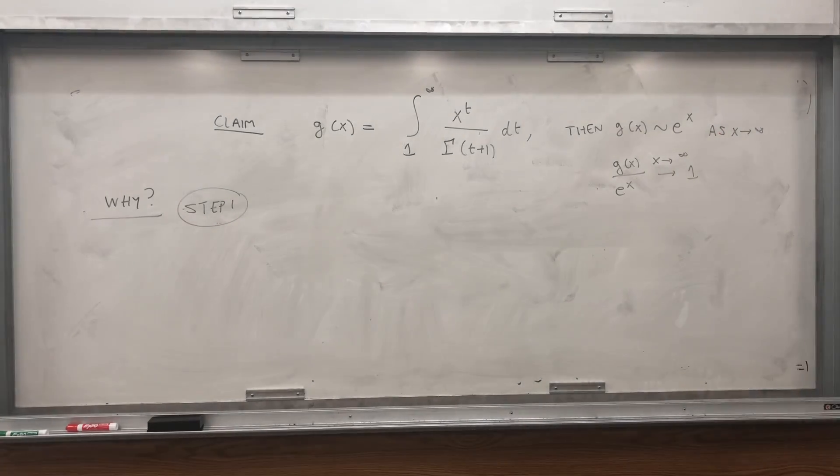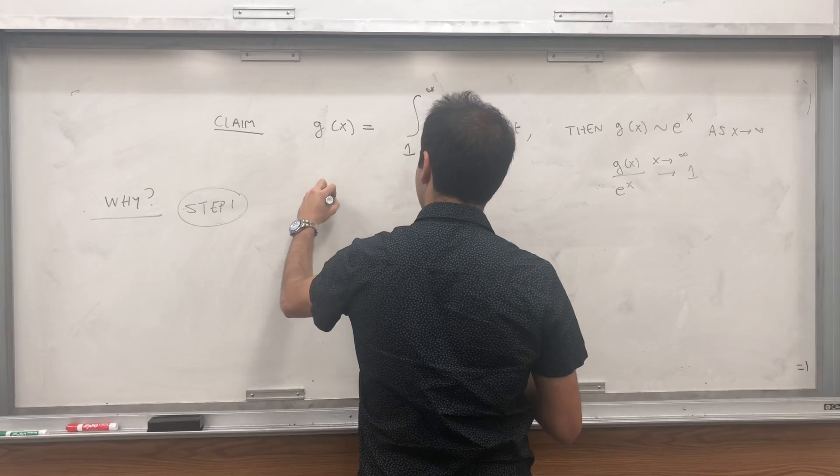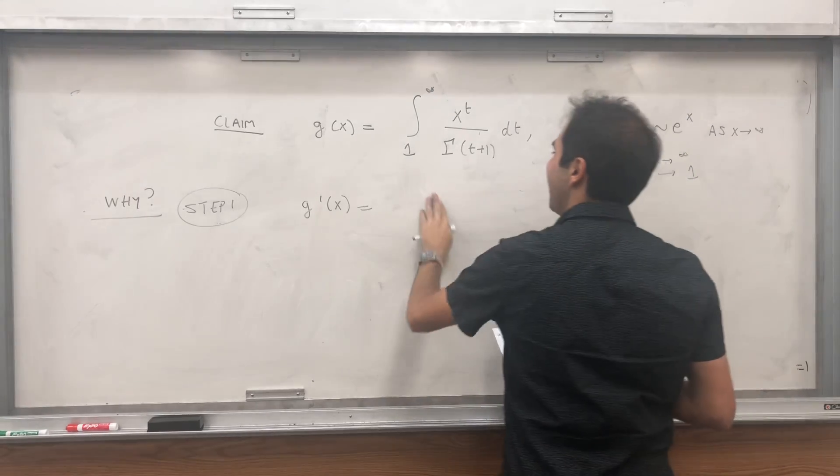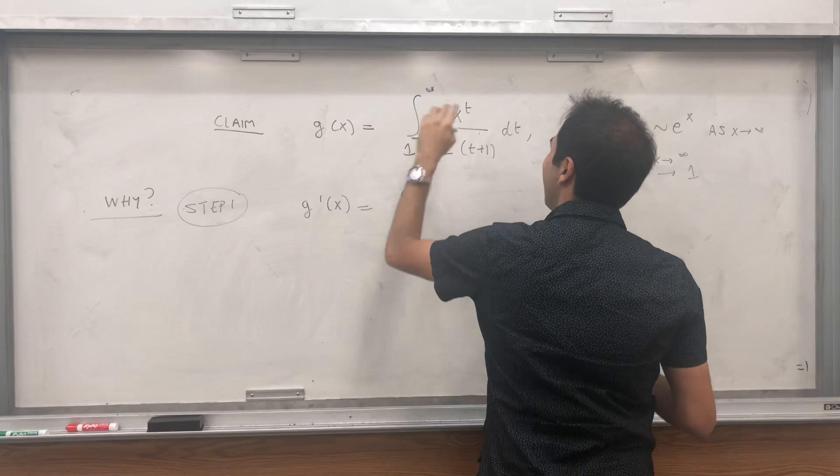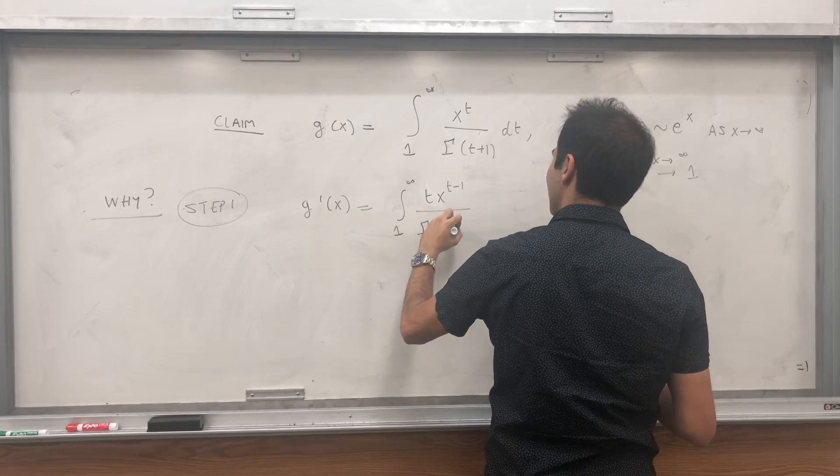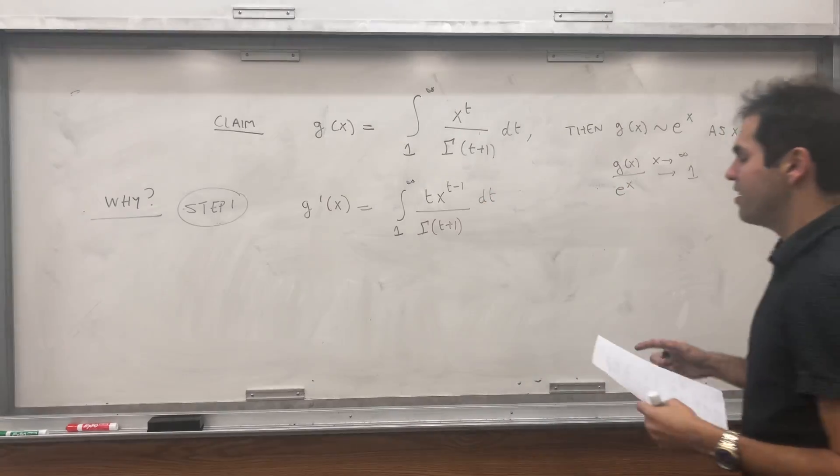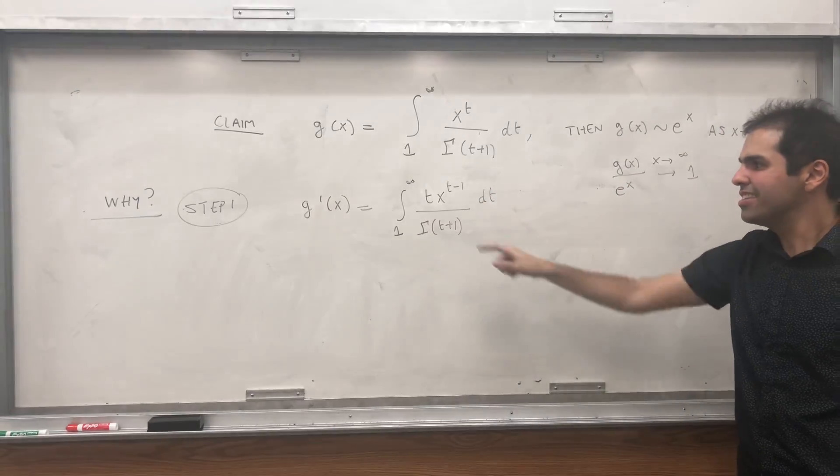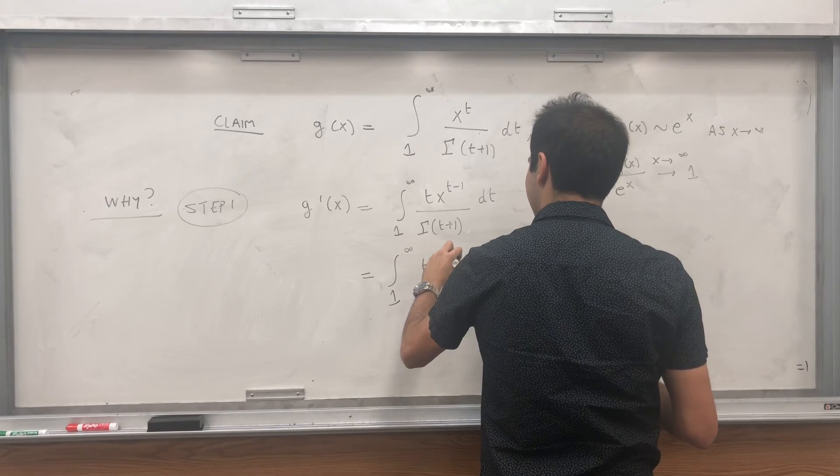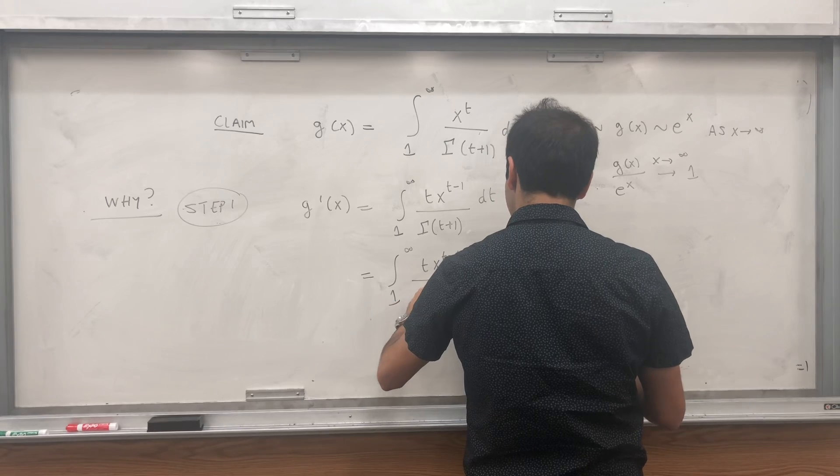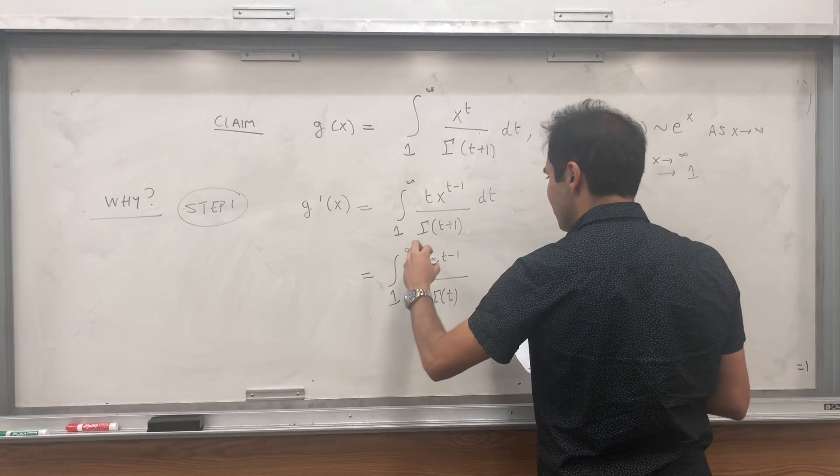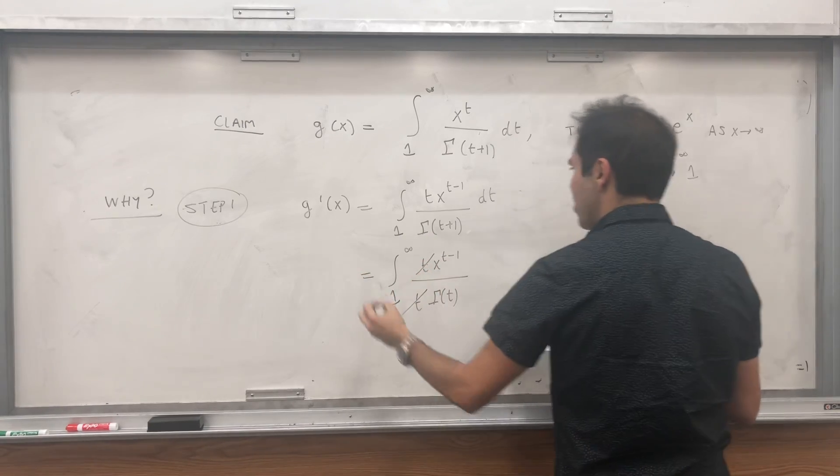It turns out this g satisfies a very nice differential equation. So let's calculate g prime of x. Again, formally, let's put the derivative inside. And again, might give an analyst a heart attack, but let's do that. So we get t x to the t minus 1. Again, it's a power function. Gamma of t plus 1 dt. And remember, the gamma function behaves like the factorial. So it has this very nice property that gamma of t plus 1 is t times gamma of t. Or something, I think that's correct. But anyway, it doesn't matter too much in this calculation. So we are left with this.